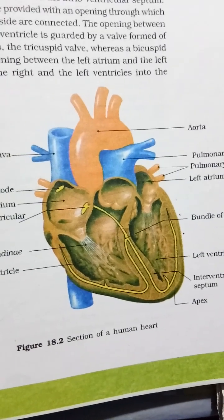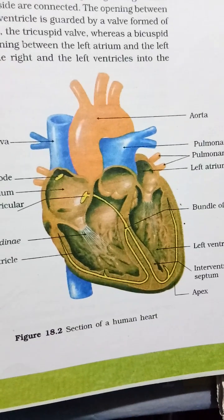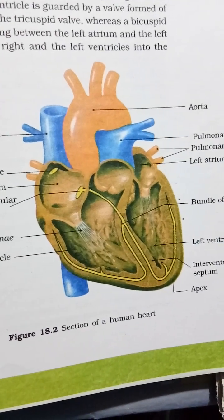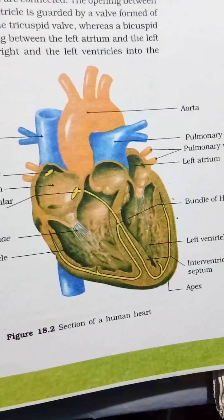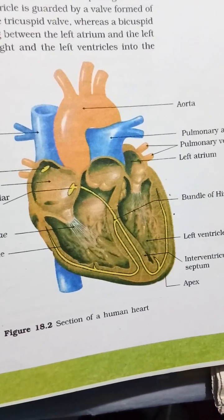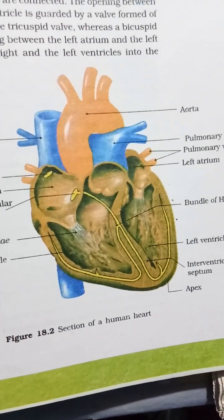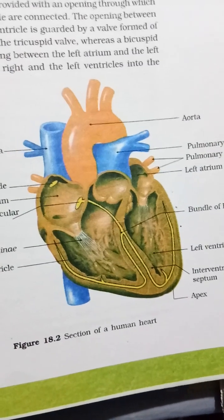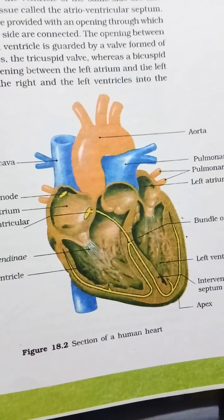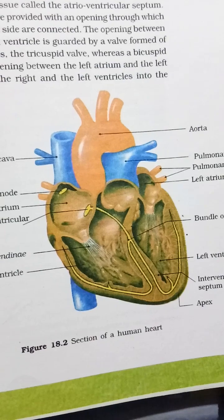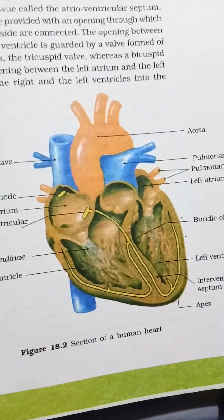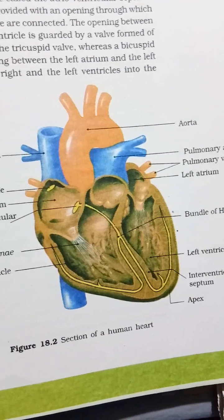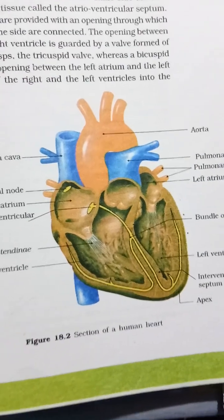Each of these septa are provided with an opening through which the two chambers of the same side are connected. The opening between the right atrium and the right ventricle is guarded by a wall formed of three muscular flaps or cusps called the tricuspid valve, whereas a bicuspid valve or mitral valve guards the opening between the left atrium and left ventricle.